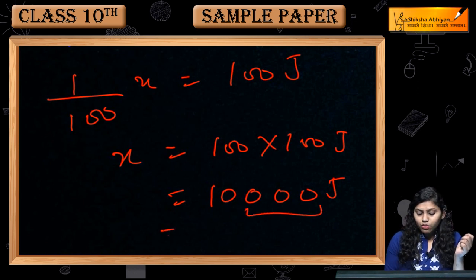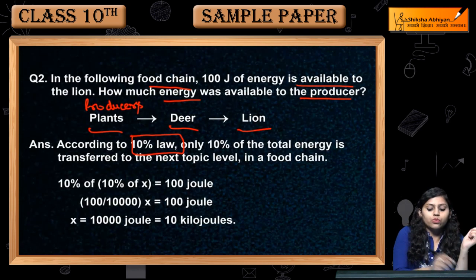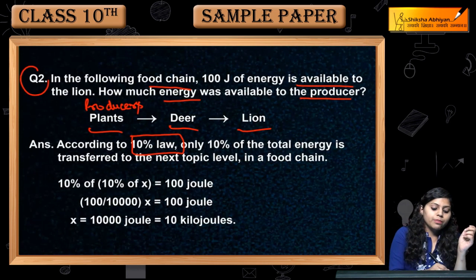Which would be? This would be kilo. So 10 kilojoules of energy, producers ke paas, plants ke paas hogi. This was question number 2.